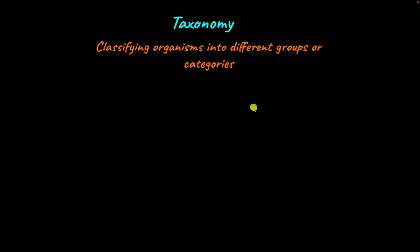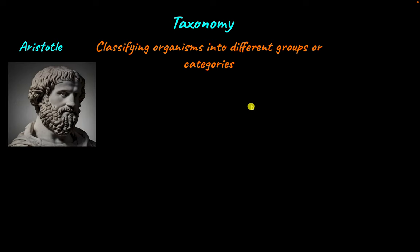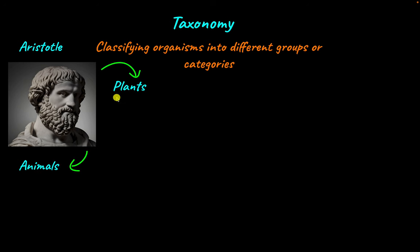Taxonomy has been in practice for a long time. Greek philosopher Aristotle was one of the earliest people to categorize organisms he could see around him. He saw that organisms could be classified into two basic categories: plants and animals.